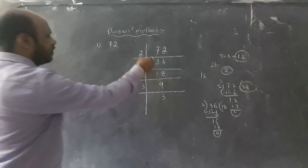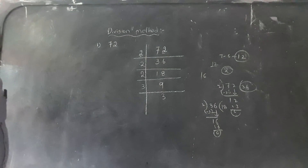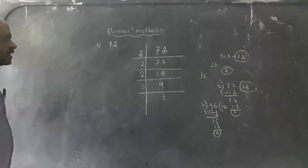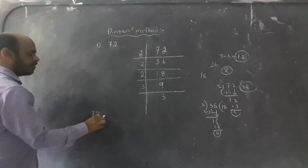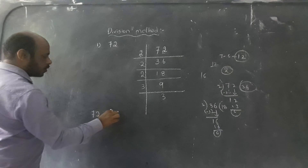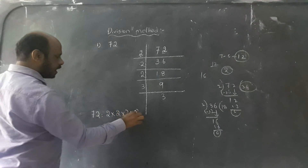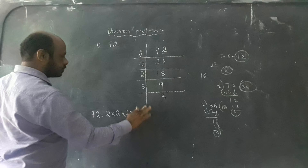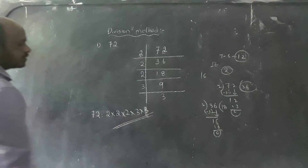This method we will say is the division method in prime factorization. So 72, how we will divide it — the product of prime numbers is 2 into 2 into 2 into 3 into 3. This is the division method in prime factorization.